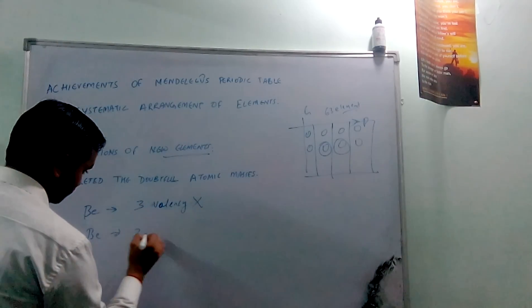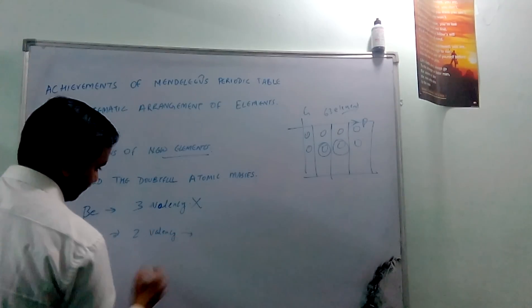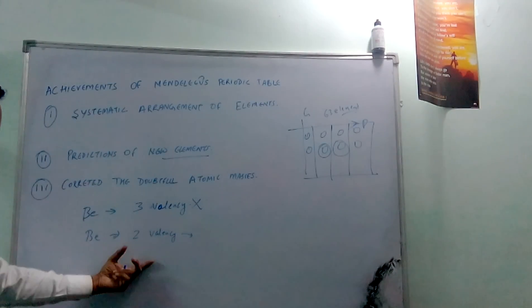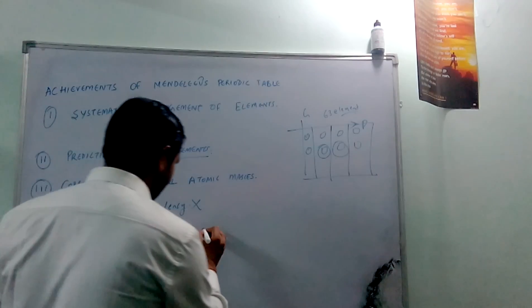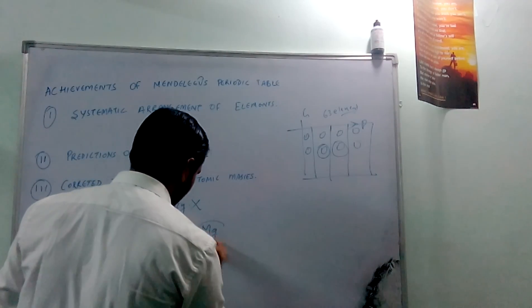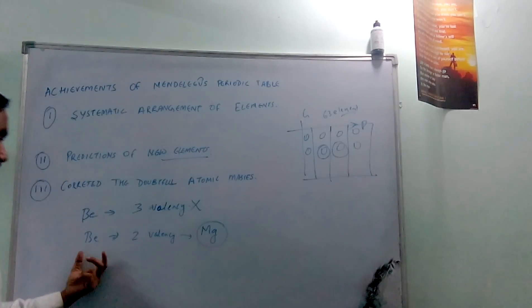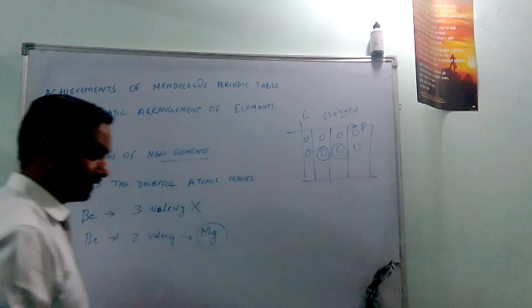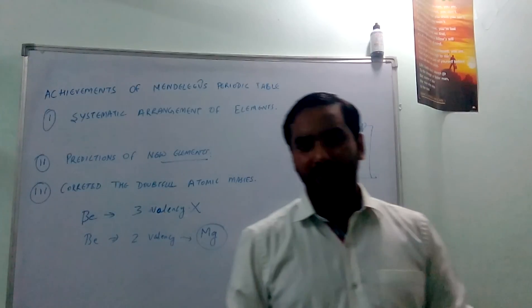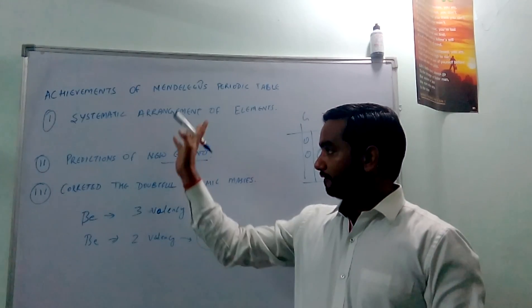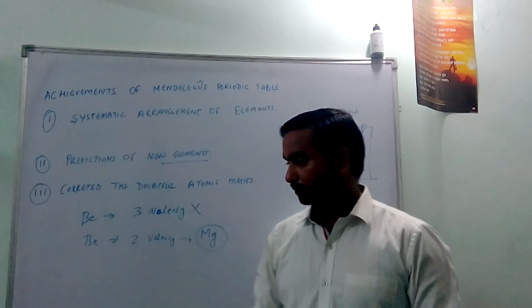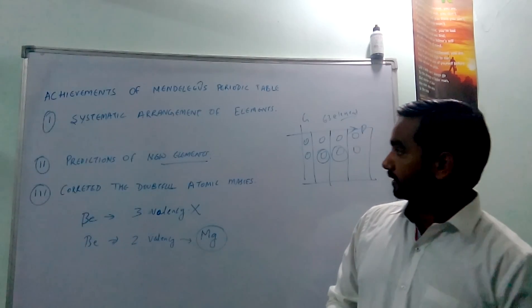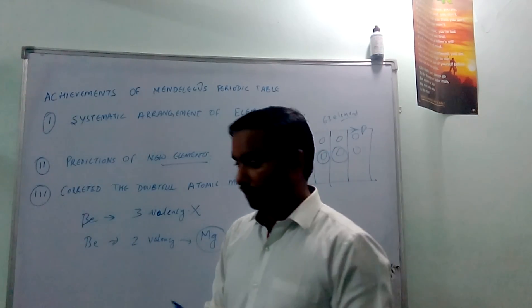And with the proof of the chemical and physical properties, beryllium is similar to magnesium. This is how he corrected the doubtful atomic masses, and it is helpful for further studies of scientists and chemists who are interested in arranging the elements. These are the three achievements of Mendeleev's periodic table.